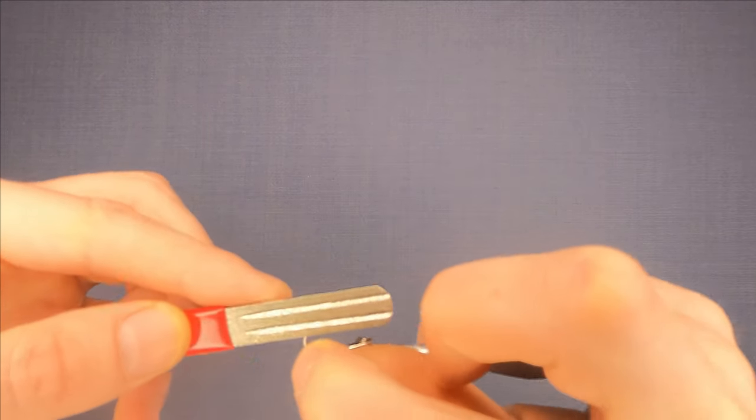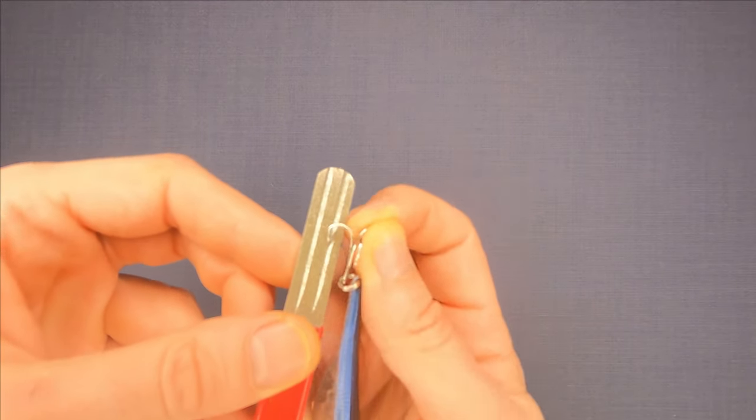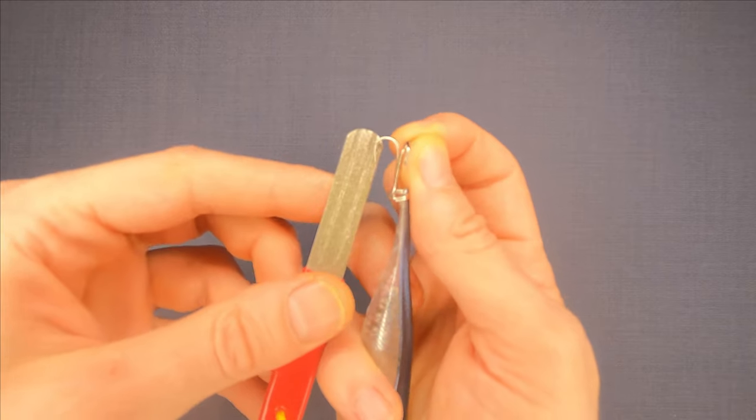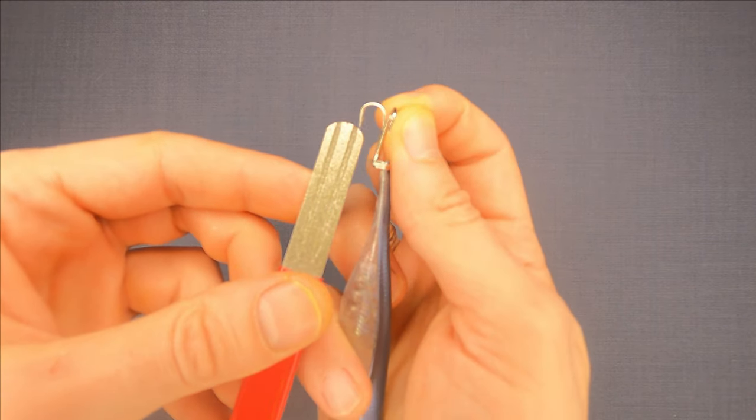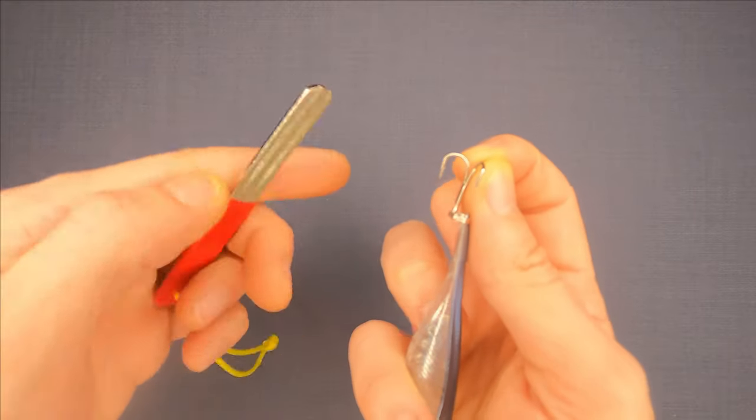If you do it away from the point that is the incorrect way to do it. Instead, you have to do it this way if you want to sharpen hooks properly. 5 to 7 times would be enough.